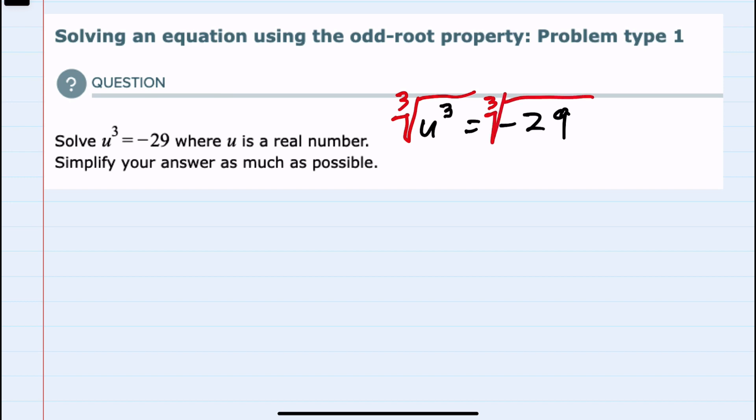On the left hand side, the cubed root and the cube cancel, leaving me with just the u.